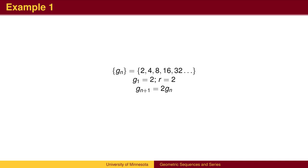For example, the sequence 2, 4, 8, 16, and so on is a geometric sequence. The first term is 2, and each subsequent term is twice the previous term. That is, the common ratio, r, is 2.